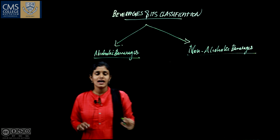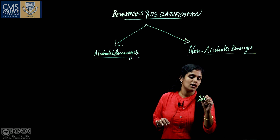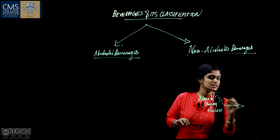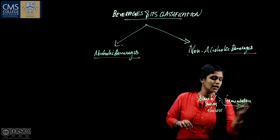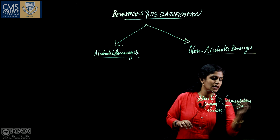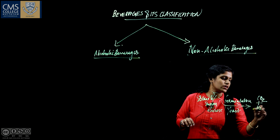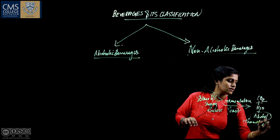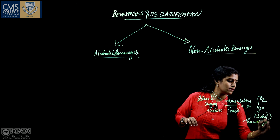Alcoholic beverages are prepared out of the fermentation process. The fermentation process is nothing but any kind of starch, sugar, or glucose acting as the substrate, undergoing fermentation in the presence of yeast. As a result of this reaction, we get the end products carbon dioxide, water, and alcohol — which is nothing but ethanol or ethyl alcohol.